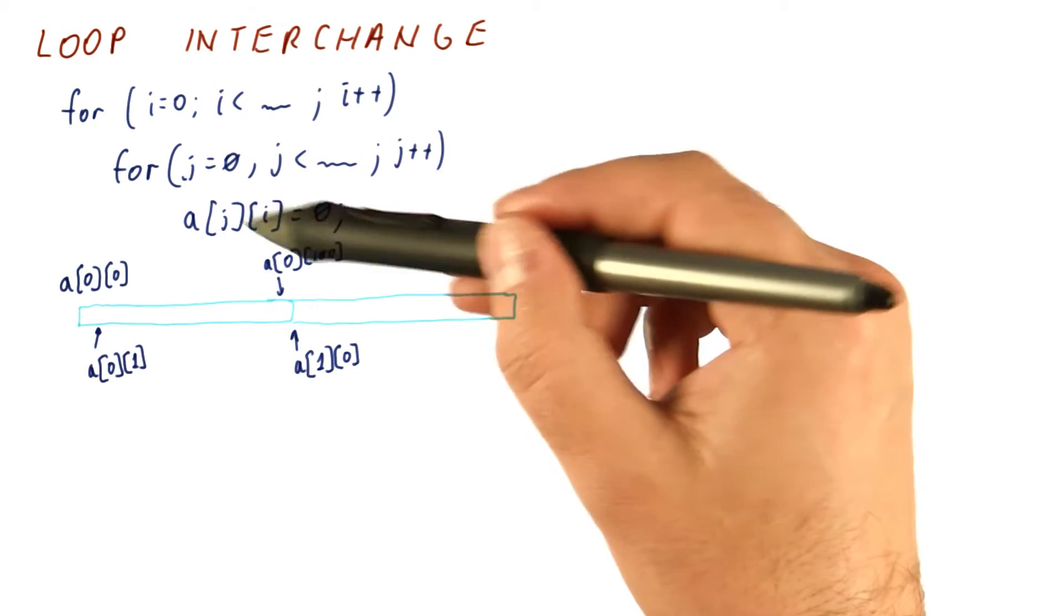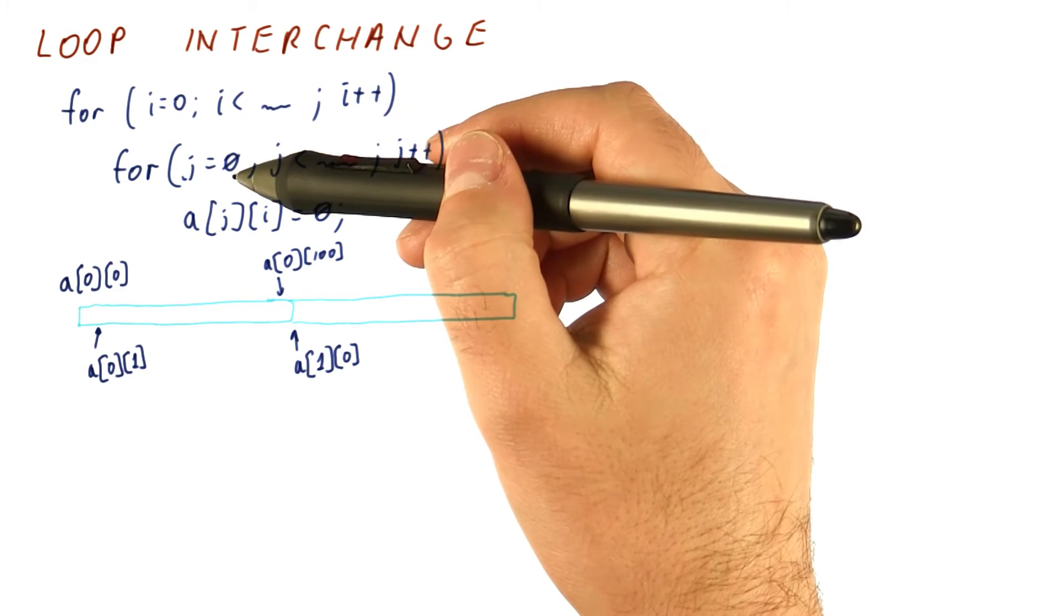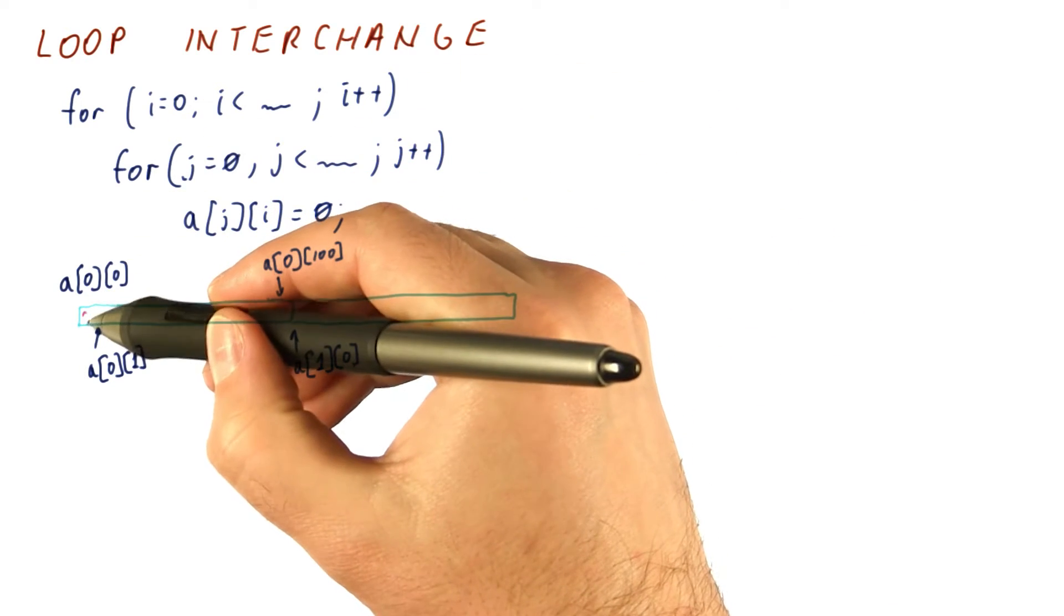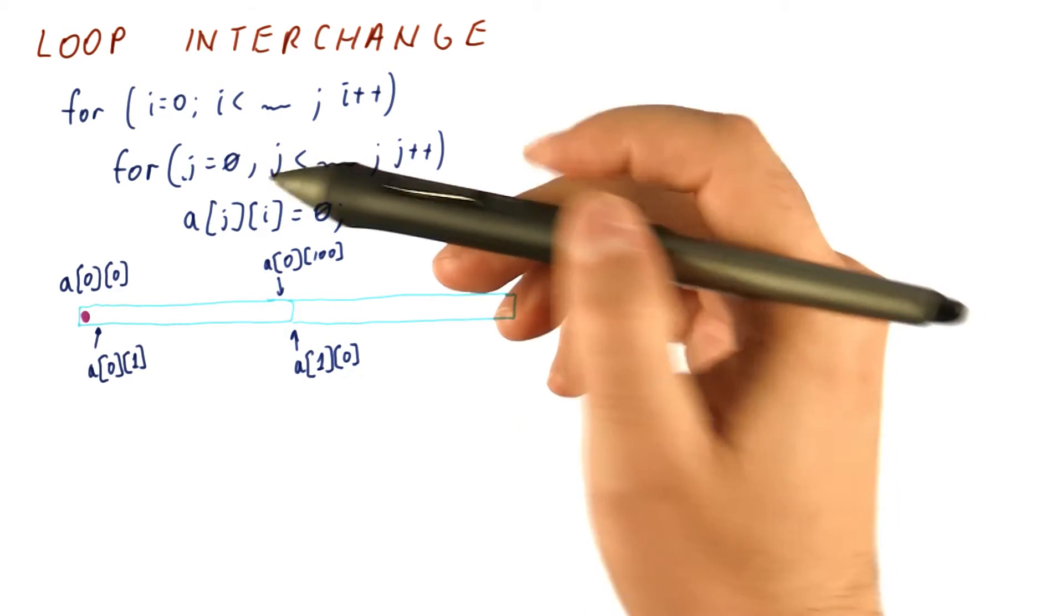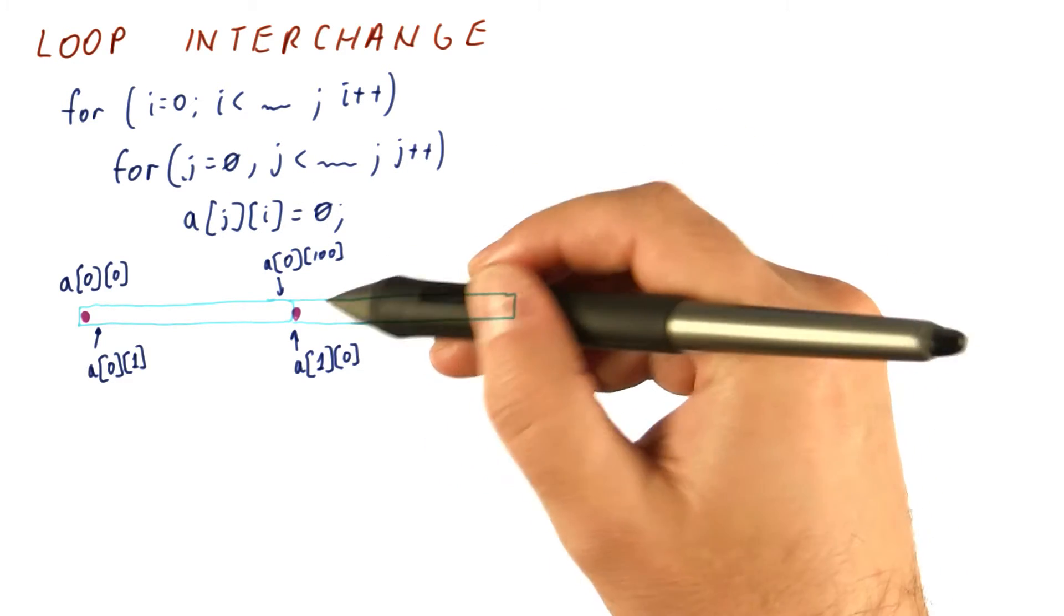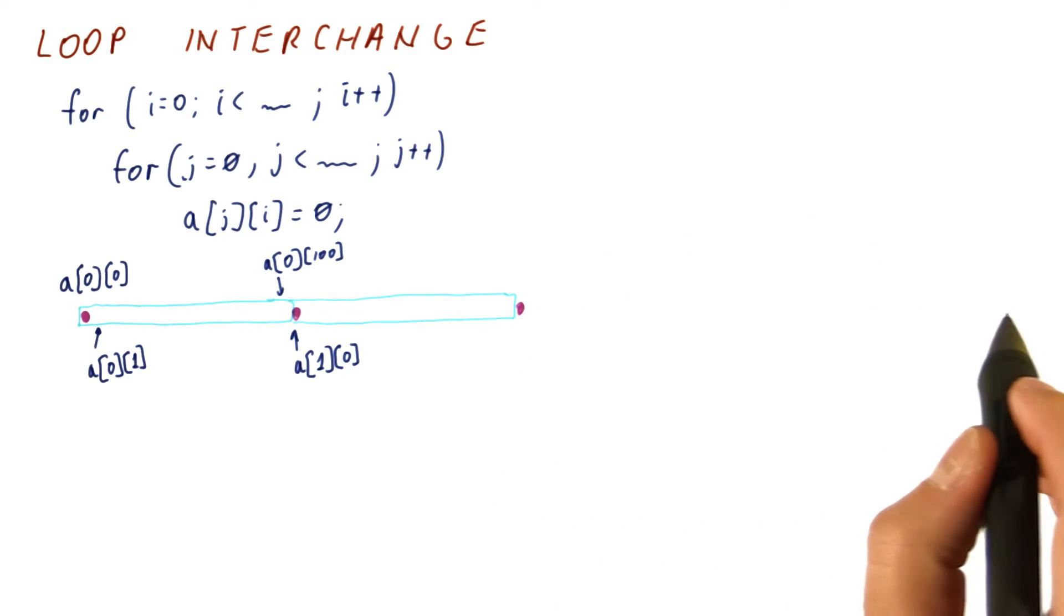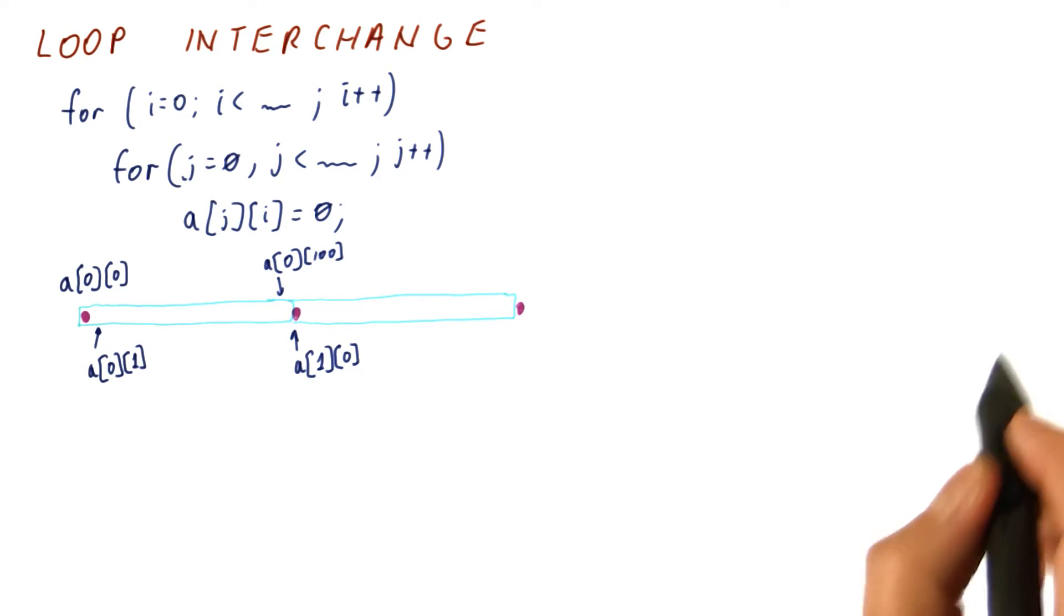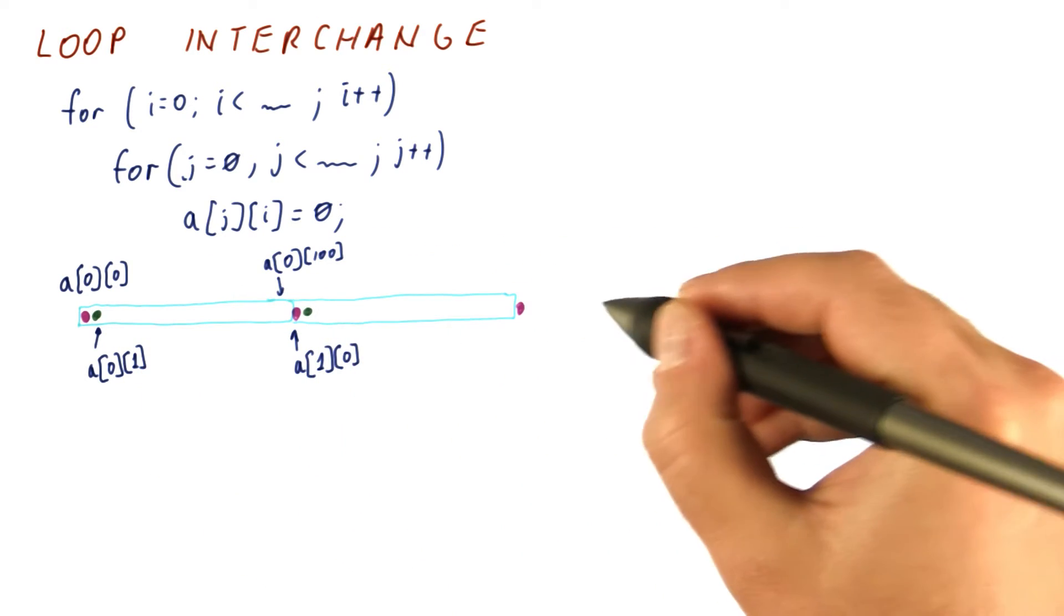So now let's look at how this loop accesses these elements. I and J are both zero at first, so we will access this element. Next, J will be incremented, so we will access this element, and then this element, and so on. We will access all of the rows of the matrix before we come back and start accessing the second element in each row.